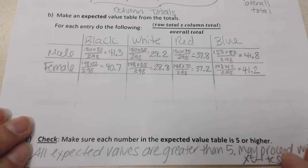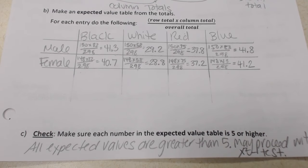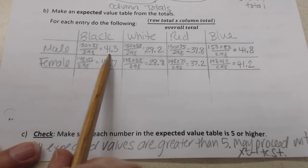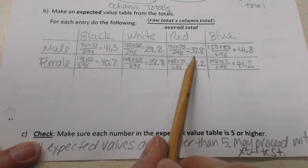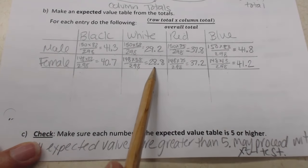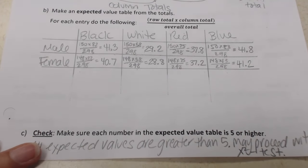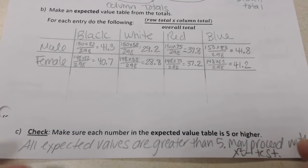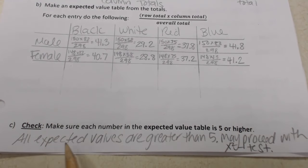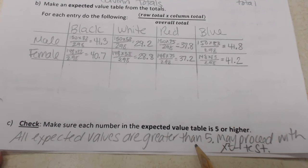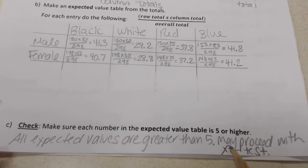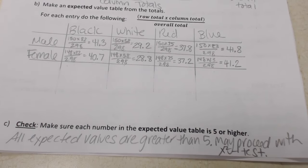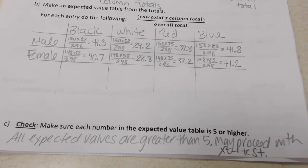Part D: check to make sure each number in the expected value table is five or higher. Looking at the values — 41.3, 29.2, 37.8, 41.8, and the female values — all of these numbers are five or greater. So we state: all expected values are greater than five; may proceed with the chi-square test. If any expected value is not five or greater in your IA, please come and see me.